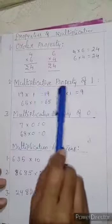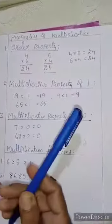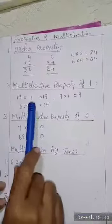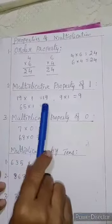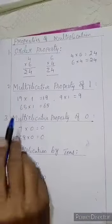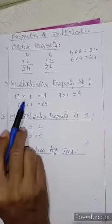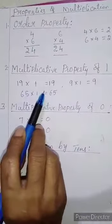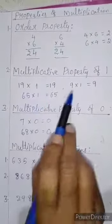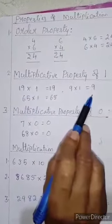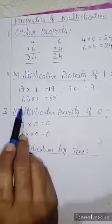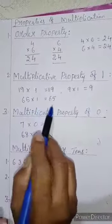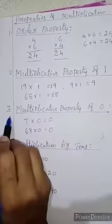Multiplicative property of 1. When a number is multiplied by 1, the product is the number itself. For example, 19 multiplied by 1 is 19; 9 multiplied by 1 is 9; 65 multiplied by 1 is 65.